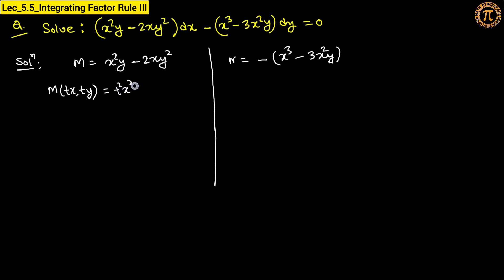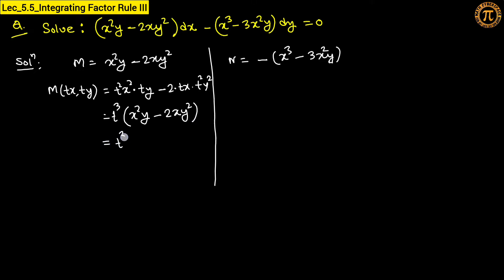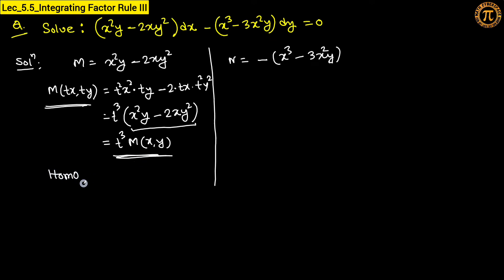For M: substitute tx and ty to get t²x² times ty minus 2(tx)(t²y²), which gives t³ times (x²y − 2xy²). So M(tx, ty) equals t³ times M(x, y), confirming M is a homogeneous function of degree 3.